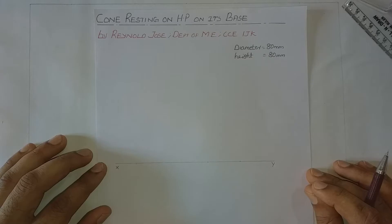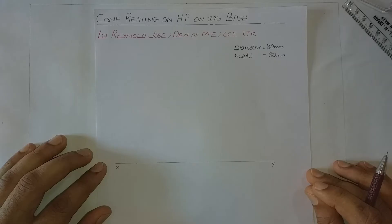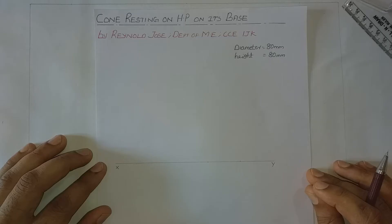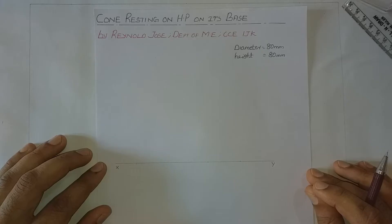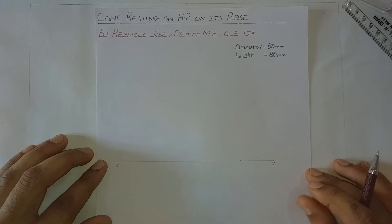We shall do the problem in which a cone is resting on HP on its base. Here we'll be doing only the simple position of the solid in which the cone is resting on its base on HP. As the cone is resting on its base on HP, the top view will be a circle and the front view will be a triangle. Let us see how we can construct the top view and front view.